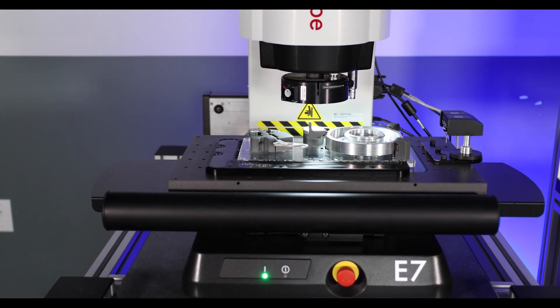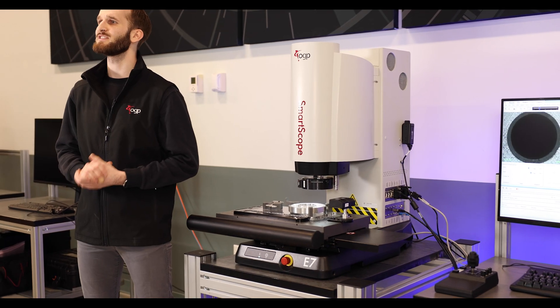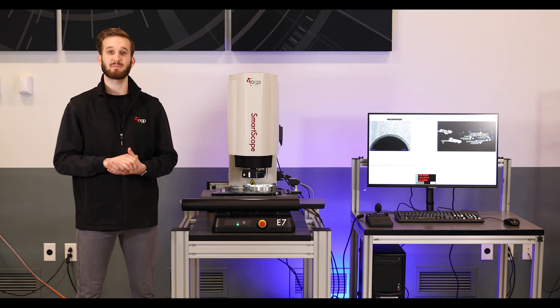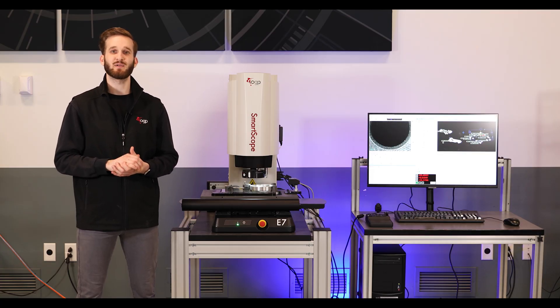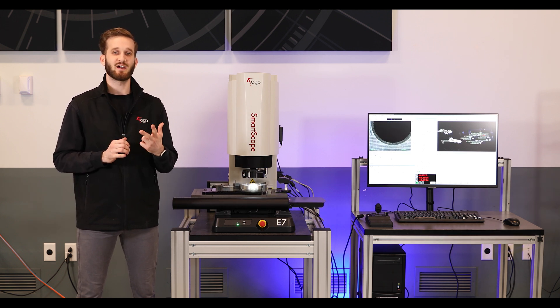SmartScope E7 is the benchtop member of the E-Series family. These systems are perfect for customers in any industry looking for an automatic three-axis video measurement system with optional touch probe capability that can be placed in an environment where ease of use, high productivity, and reliability are extremely important.